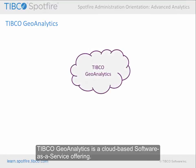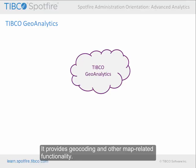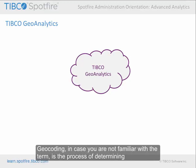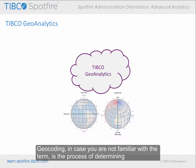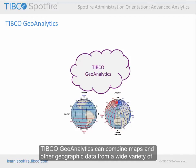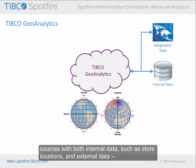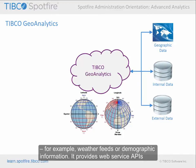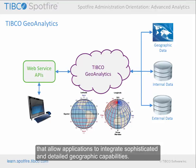TIBCO GeoAnalytics is a cloud-based, software-as-a-service offering. It provides geocoding and other map-related functionality. Geocoding is the process of determining latitude and longitude coordinates for a location based on information such as the city or address. TIBCO GeoAnalytics can combine maps and other geographic data from a wide variety of sources, with both internal data such as store locations, and external data such as weather feeds or demographic information. It provides Web Service APIs that allow applications to integrate sophisticated and detailed geographic capabilities.